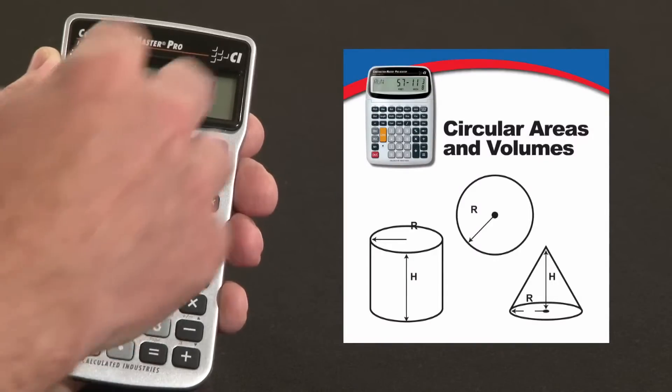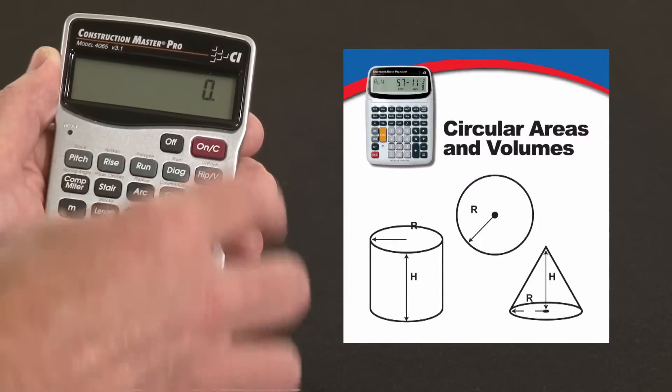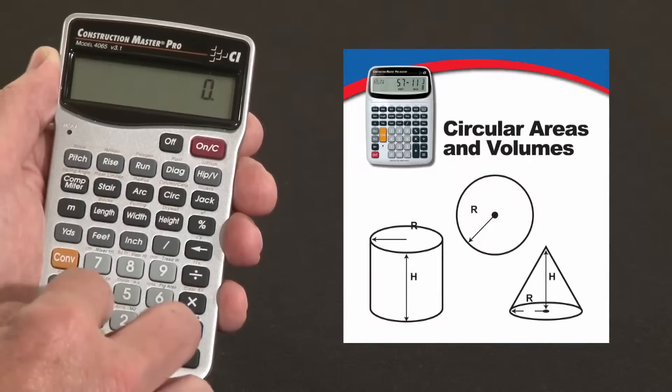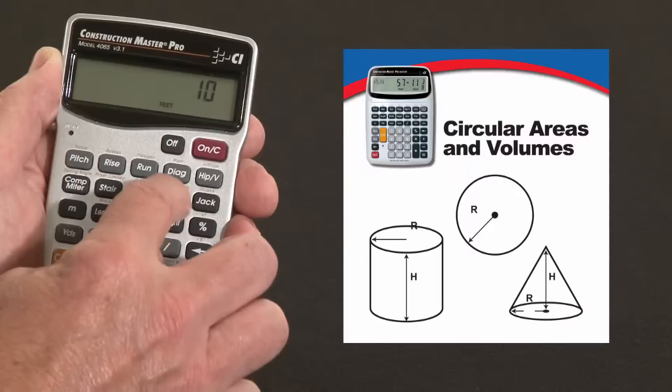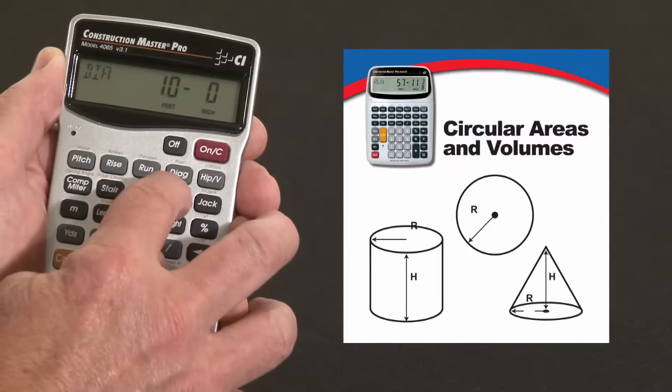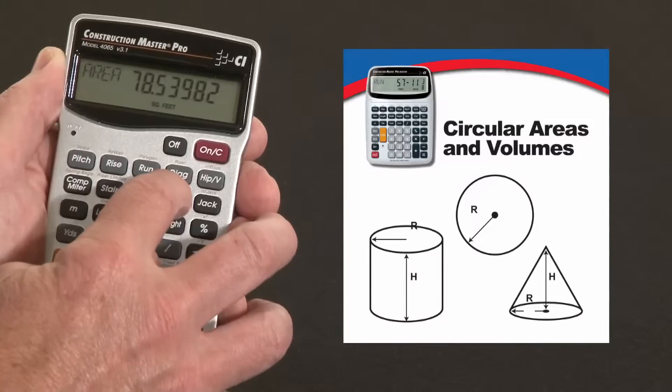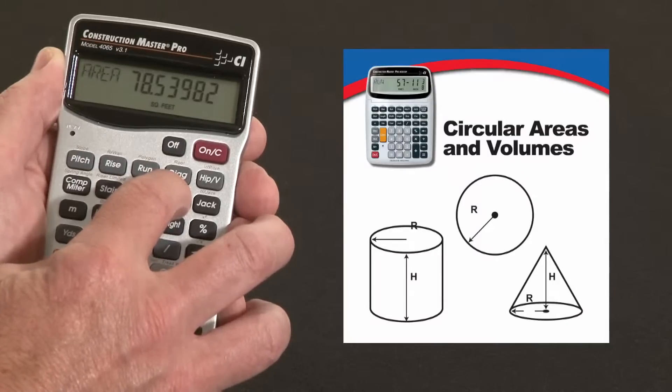Say you've got a patio with a semi-circular edge on it with a 10 foot diameter circle, and I want to figure out the arc length. 10 feet is my diameter. Press it again, there's my surface area. It shows me the surface area of the whole patio, the whole circle.